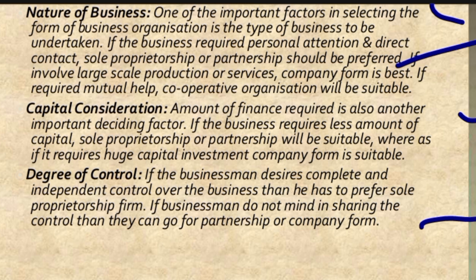Next is degree of control. If you need complete and independent control in your business — you just want to control everything yourself — then you need to open a sole proprietorship firm, where ownership and management remain in your hands. But if you are willing to share control, then you can go for partnership or a company.